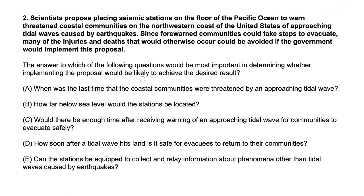Now let's look at number two. Scientists propose placing seismic stations on the floor of the Pacific Ocean to warn threatened coastal communities on the northwestern coast of the United States of approaching tidal waves caused by earthquakes. Since forewarned communities could take steps to evacuate, many of the injuries and deaths that would otherwise occur could be avoided if the government would implement this proposal. The question asks: the answer to which of the following questions would be most important in determining whether implementing the proposal would be likely to achieve the desired result?